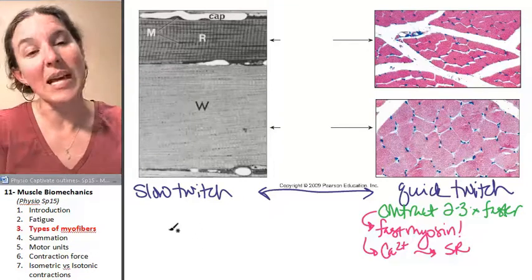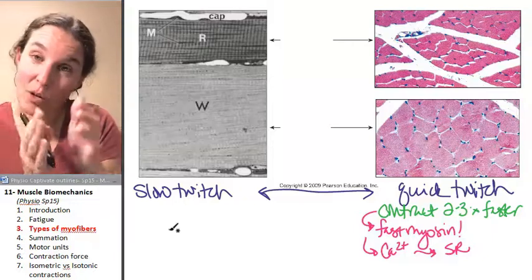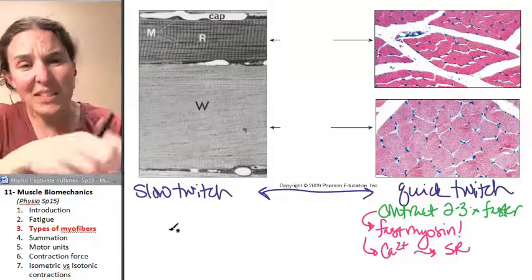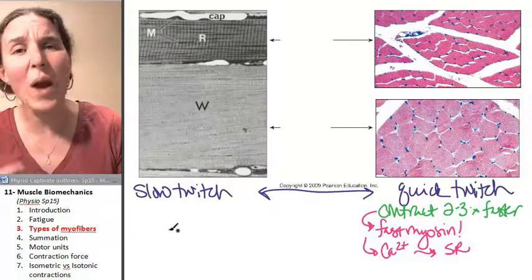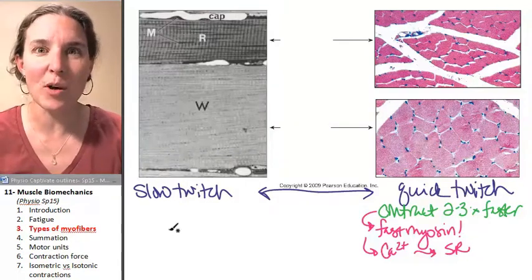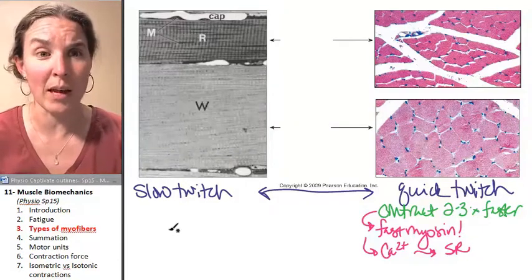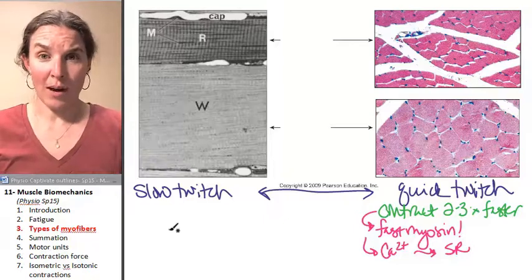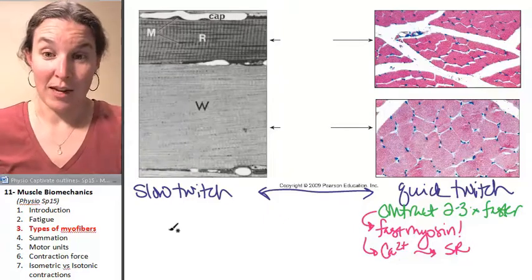Now slow twitch, the calcium comes out. It does its thing. We get a slow contraction. And then we have to like run around. We're just way less efficient at cleaning up. It's like your kids cleaning up their room or you cleaning up your kid's room. And yeah, you know that I'm the quick twitch fiber in that little analogy.